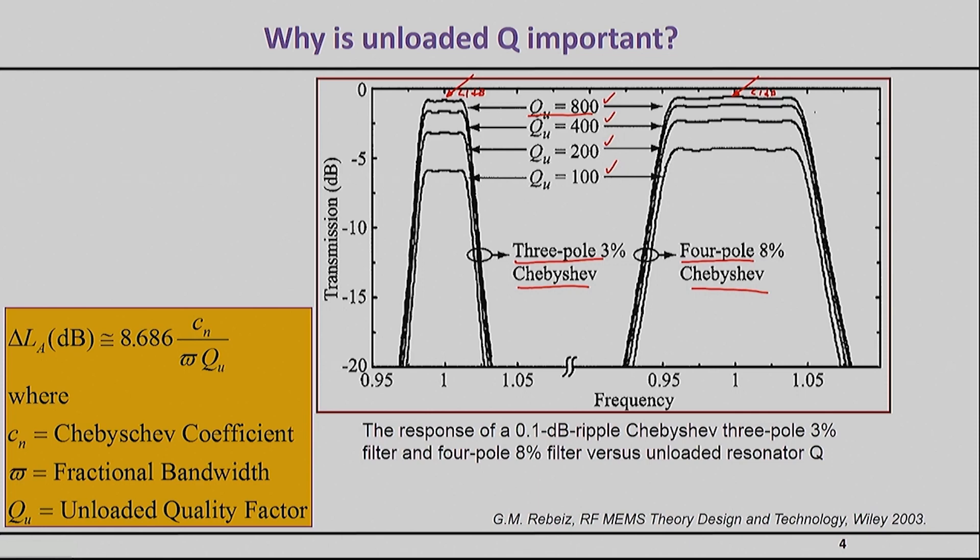But now if you're limited with a quality factor of the resonator to be only 100, then suddenly the loss here will jump to something in the order of 6 dB. For most practical applications, that filter is actually unusable. For most cases, having a 6 dB insertion loss for the front end is a pretty bad choice.